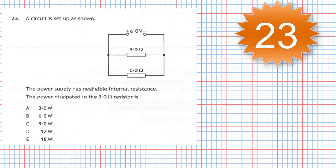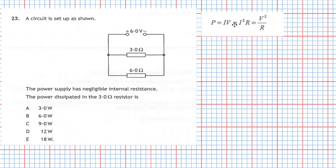Question 23 from section 1 of the 2019 Higher Physics examination. A circuit is set up as shown. The power supply has negligible internal resistance and the power dissipated in the 3 ohm resistor is — I'm given five choices. I need to find the power lost in that 3 ohm resistor using the data sheet.